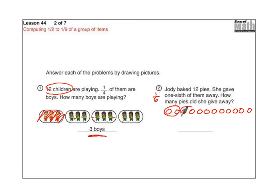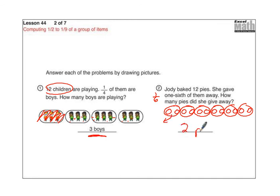So we are going to have two in each one. 12 divided by 6 is 2. And so by giving 1 sixth away, she gives away those two pies. The answer is two pies.